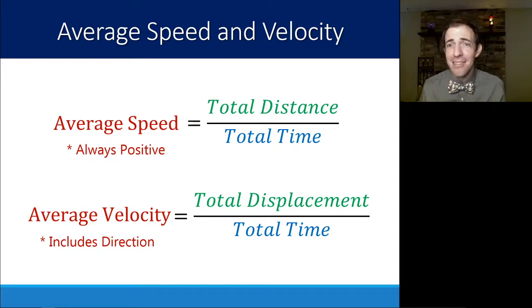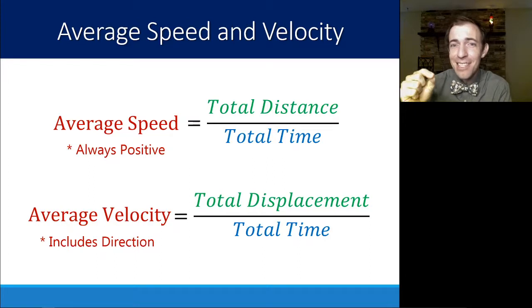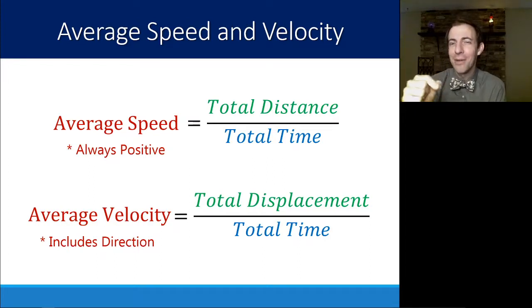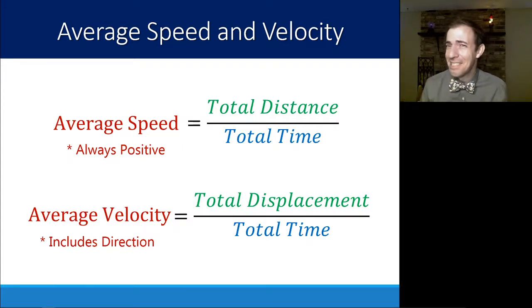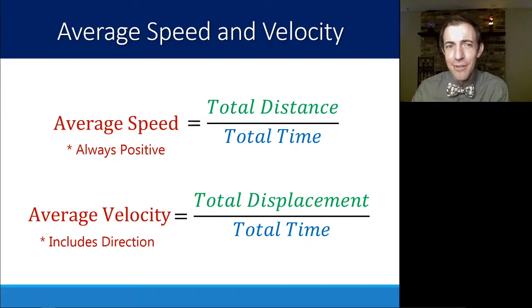Here's a scenario that might appear on a test: you run 400 meters all the way around a track and end up exactly where you started in one minute. You can calculate your speed as 400 meters divided by 60 seconds. But your velocity — since your displacement is technically zero because you ended up exactly where you started — your average velocity is also technically zero. Not very useful, but it could be used to trick you.